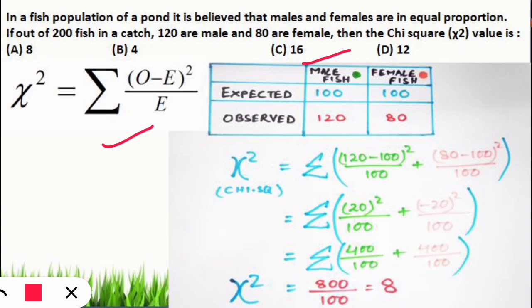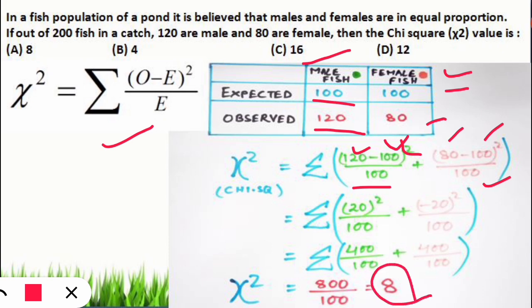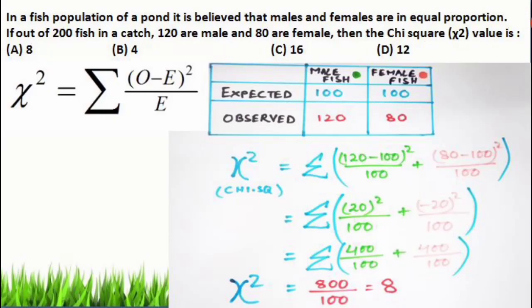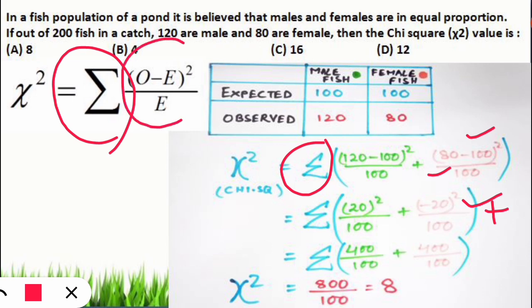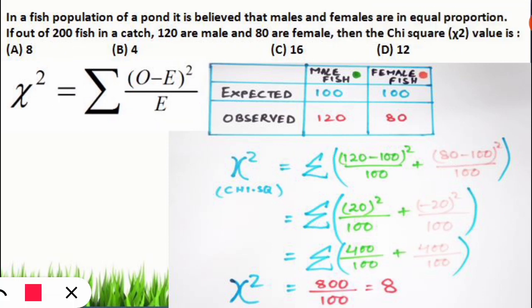Applying the formula: for male fish, (120 − 100)² / 100; for female fish, (80 − 100)² / 100. We square the numerator to convert negative values to positive form — since 80 − 100 = −20, squaring makes it positive. Adding both terms: 400/100 + 400/100 = 4 + 4 = 8. The chi-square value is 8, so the correct option is option A.